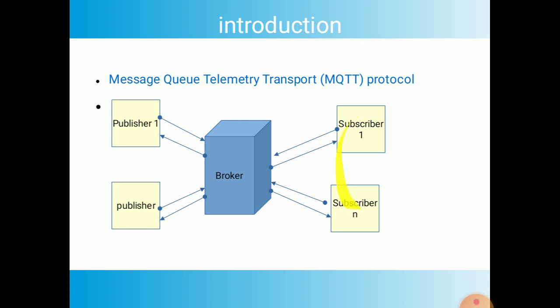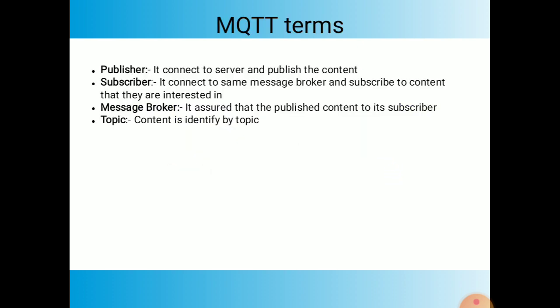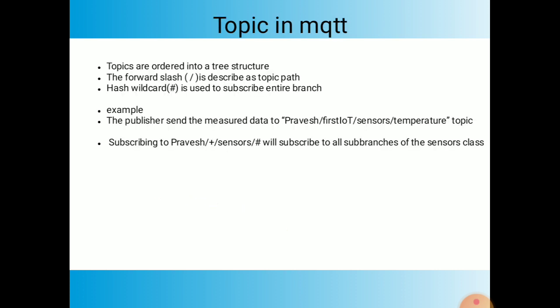The subscriber subscribes to this content from the message broker via a topic. Topics are ordered into a tree structure, similar to a file system. Just as we use a forward slash to navigate to a particular file in the file system, in MQTT the forward slash is used to describe the topic path — we reach a particular path using the forward slash.